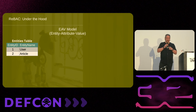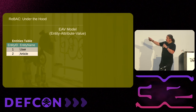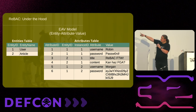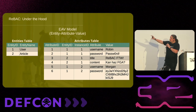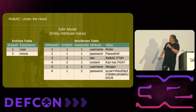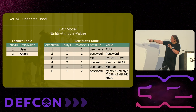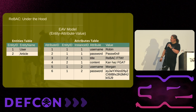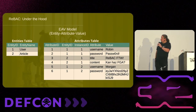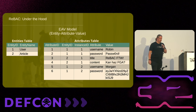Let's look at how that works using a blog post system. We've got a user and an article. On the right-hand side we've got a jumbled load of data, but you can see the entity ID column. The first, second, and last two rows in the attribute table belong to a user. Because the second column has number twos, the third and fourth rows belong to an article. So the user's username is Robin and the user's password is 'password'. There's also username Morgan. We've got an article with a title of 'Reback for the Win' and content 'can has FGA' — fine-grained access control.